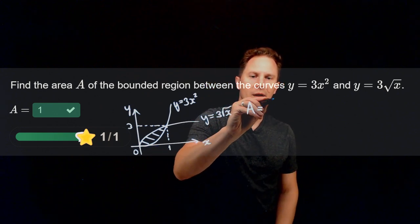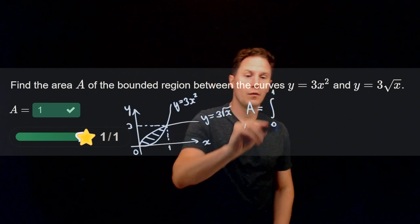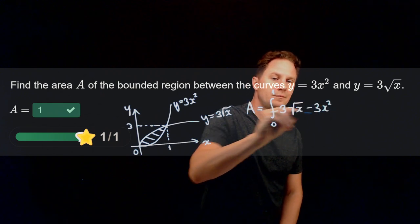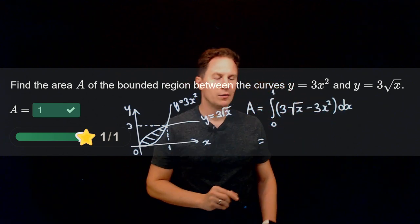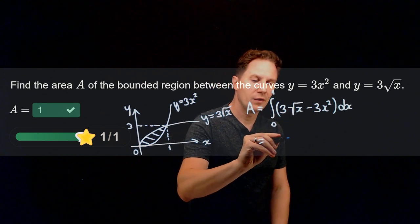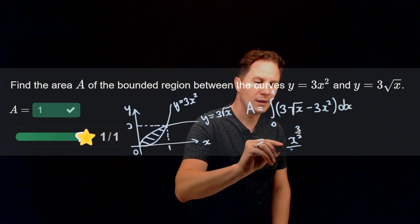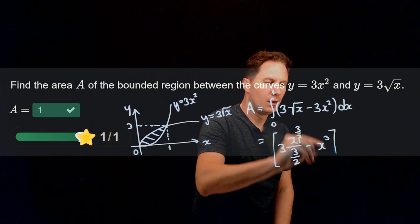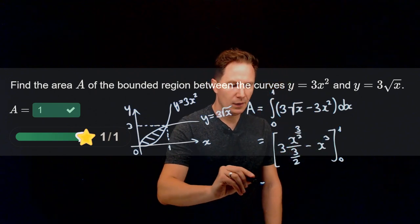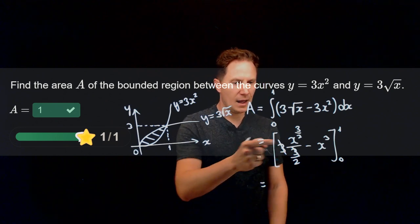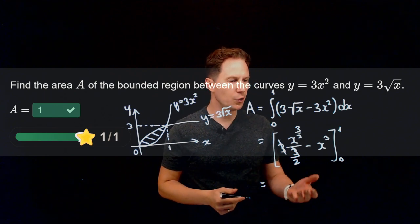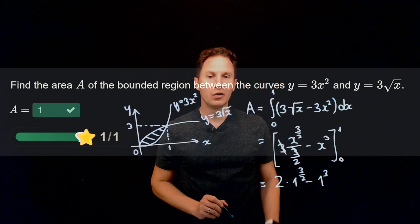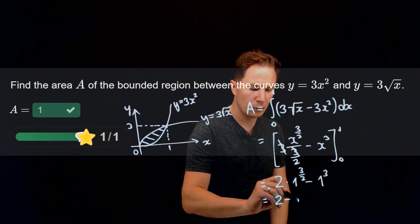The area is given by the integral from 0 to 1 of the difference of the two functions, namely 3 times square root of x minus 3 times x squared. Using the power rule, an antiderivative is 2 times x to the 3/2 minus x cubed. Evaluating from 0 to 1: at x equals 1 we get 2 times 1 minus 1, which is 1, and at x equals 0 we get 0. So the area is 1.